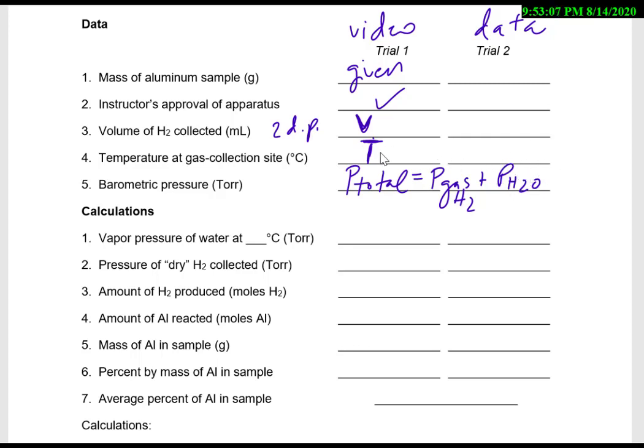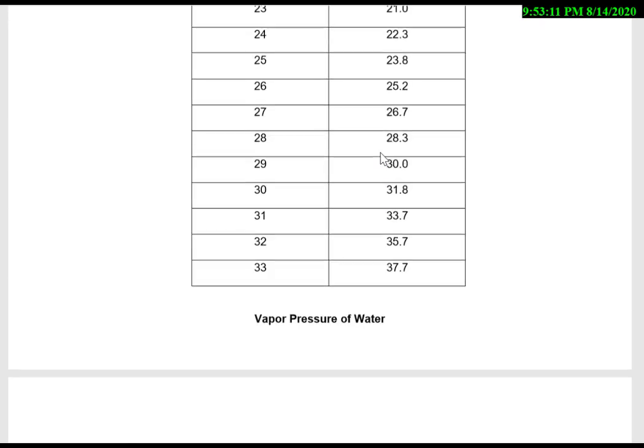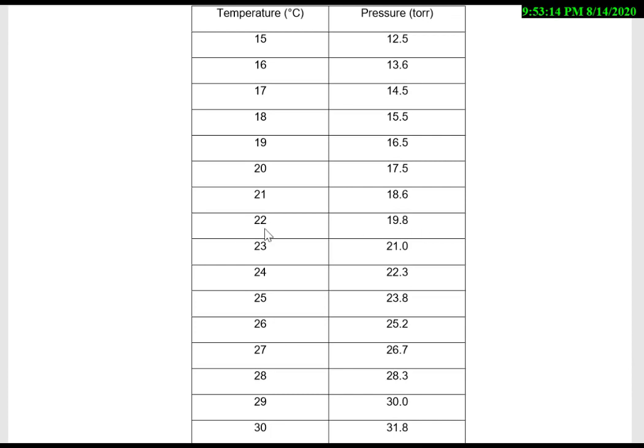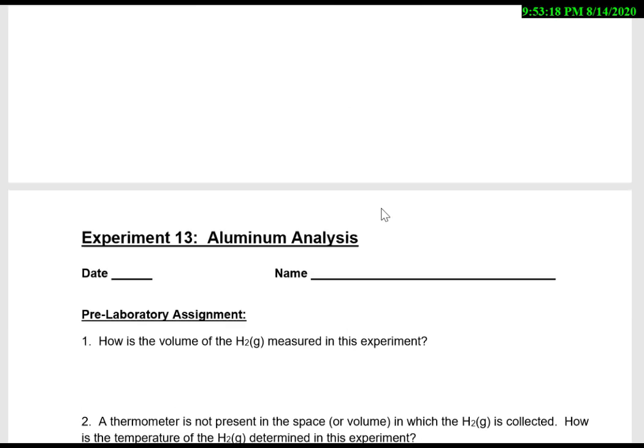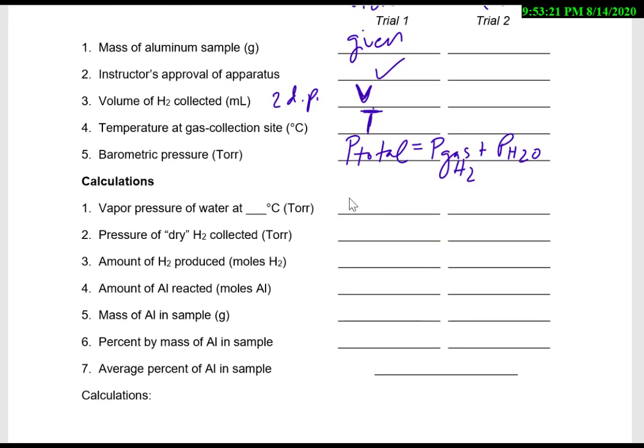So we're going to be given the P total here, but we need to subtract out the pressure of water. So what we'll do is we'll take this temperature that we're given and we'll go up to our table, whatever that temperature is, we'll take this amount of pressure and record it as the water vapor pressure. So we'll get this water vapor pressure from that table. The table in your manual you'll be able to find what the vapor pressure of water is at your temperature, and so then to get the pressure of dry, you'll take your P total and you'll subtract out your P water to get your P of just your hydrogen gas, which is what we actually want to use as our P.